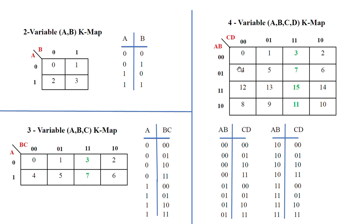For a 4-variable K-Map, the cells are numbered from 0 to 15. In the top row: 0, 1, 2, 3, 4, 5, 6, 7. Then coming down: 8, 9, 10, 11, 12, 13, 14, 15. This numbering is constant for all problems.